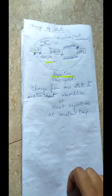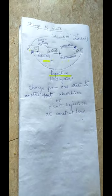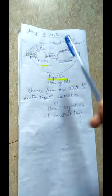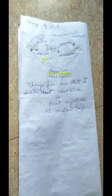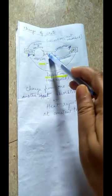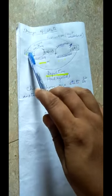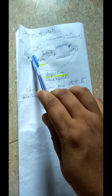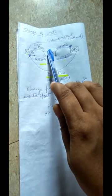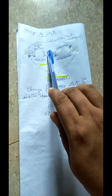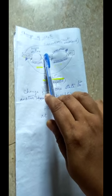Melting or fusion is the change from solid state to liquid state at a fixed temperature. The temperature at which the solid changes into liquid is known as the melting point of the solid. For example, ice melts at 0°C.